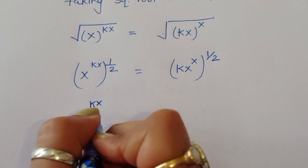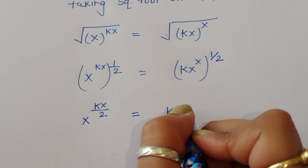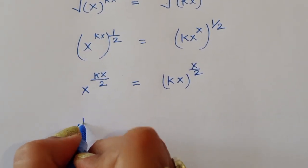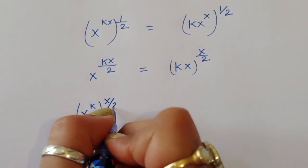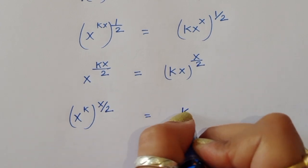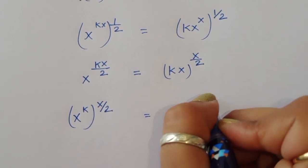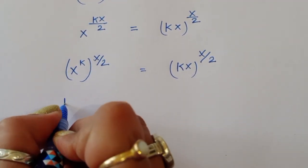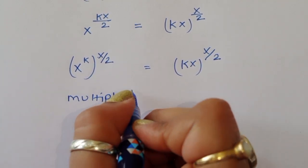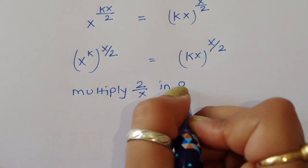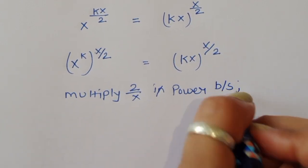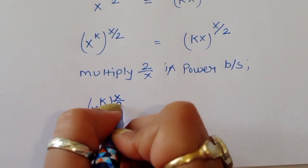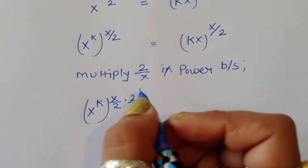This gives us x^(kx/2) = (kx)^(x/2). Now separating the power on the left side: x^k raised to the power x/2 equals k times x raised to the power x/2. Now we multiply both sides by the power 2/x to cancel the x/2 exponent.